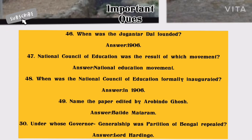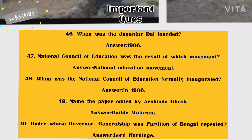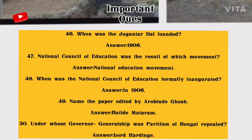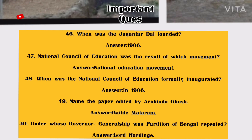Number 47: The National Council of Education was the result of which movement? Answer: National Education Movement. Number 48: When was the National Council of Education formed? Answer: 1906. Number 49: Name the paper edited by Aurobindo Ghosh. Answer: Yugantar / Vande Mataram.